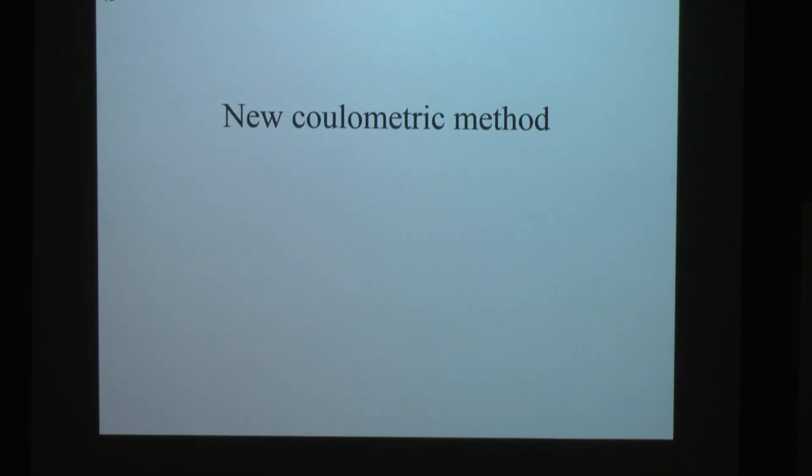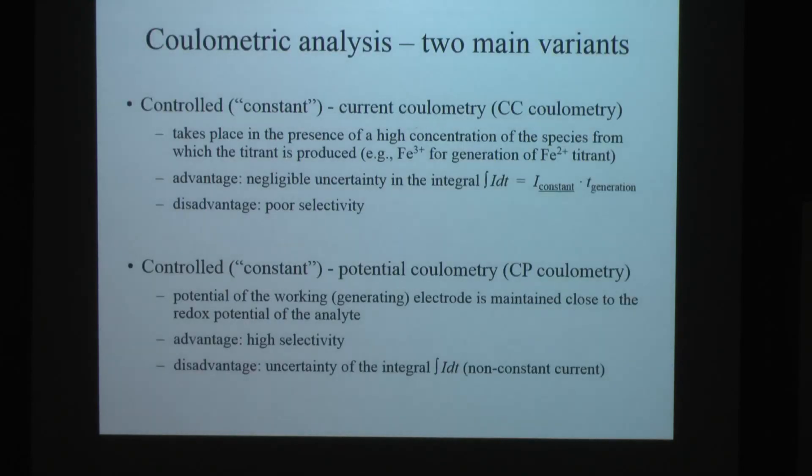And this is at the end, a new coulometric method. The reason I did this was a joke, but it's serious. In coulometry, I said to get the most accurate integral, you have a constant current. So you have, that's controlled constant current coulometry. I call that CC coulometry, controlled current or constant current, CC.